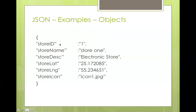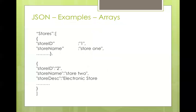Here's an example of an object. An object starts with a curly bracket and ends with a curly bracket, like a structure. You have key-value pairs — this is your key and the value, the key and the value. It's like a hash table. So if you want to get the store ID, you pass the store ID key and it will give you back the value. That is the object — straightforward.